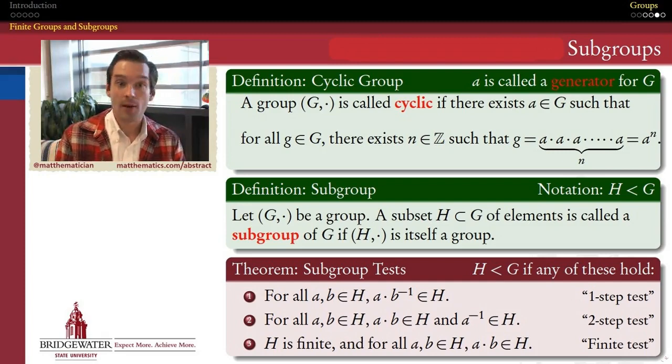So this set of theorems is called the set of subgroup tests, and they come in three flavors: a one-step test, a two-step test, and what I call a finiteness test.